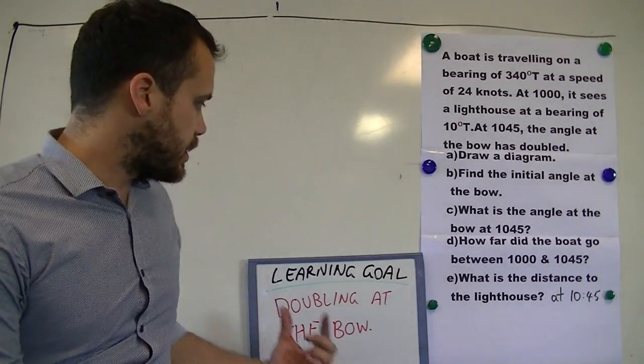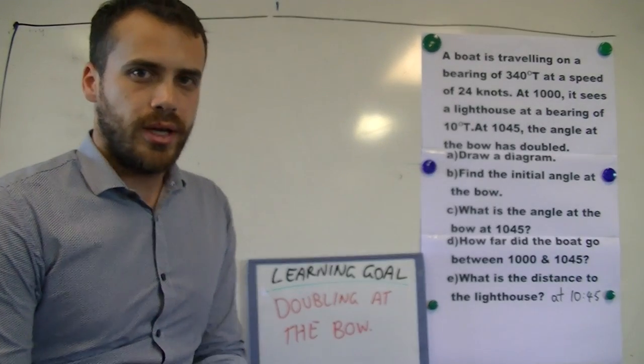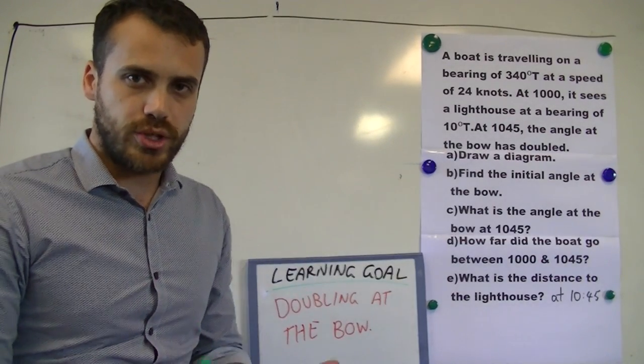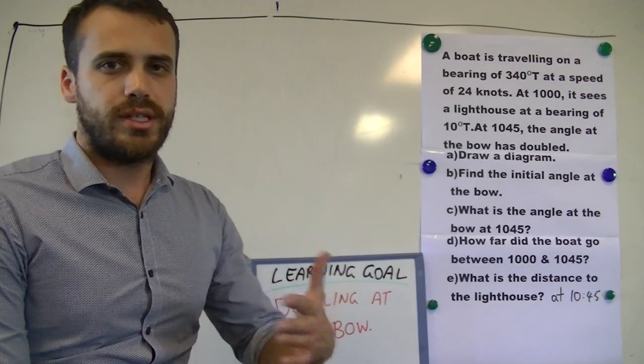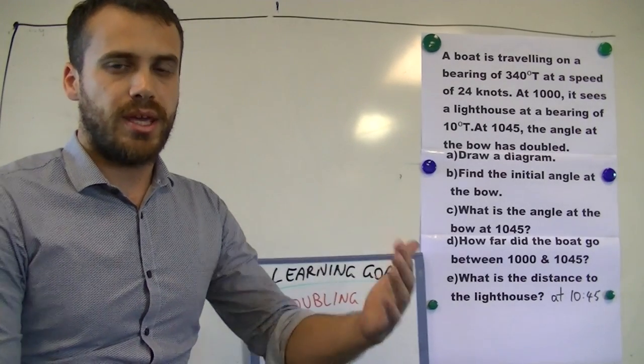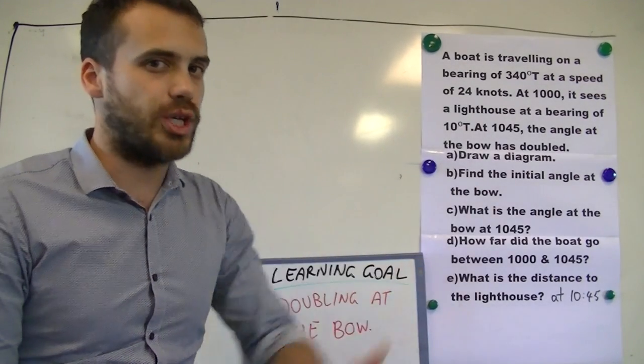So the learning goal for today is doubling at the bow. Now I'm going to run through a question so you can see what it does. The idea behind doubling at the bow is being able to find the distance to an object that you've spotted.